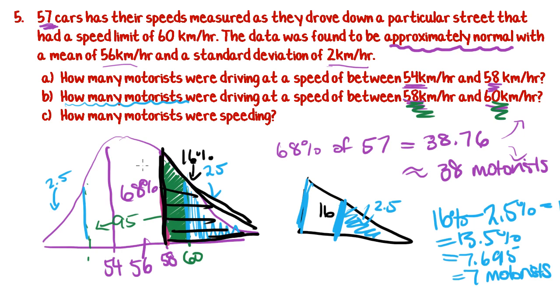Okay, so part C. Now they want to know how many motorists were speeding. What is speeding defined as? The speed limit is 60 km an hour. So they want to know how many people were going above that speed. Well, we've already worked out that 60 falls two standard deviations up from the mean. So all we need to work out is what's in this remaining section here, which we've actually already done as part of the previous question. We worked out that if there's 95 in the middle, that remaining tail must be 2.5 percent.